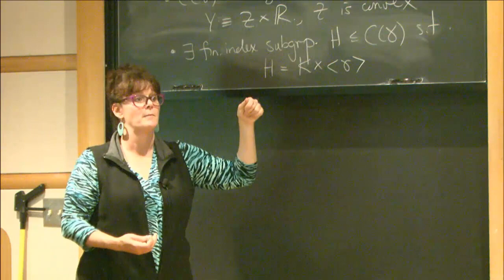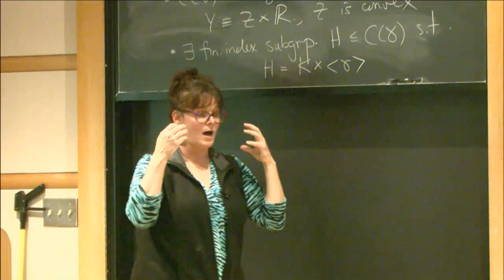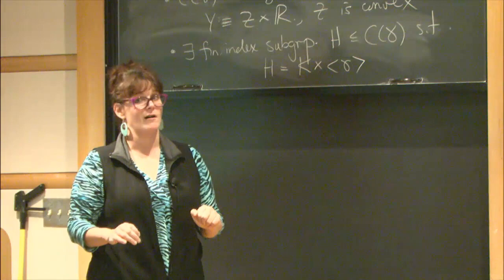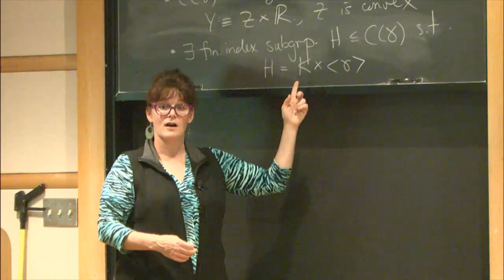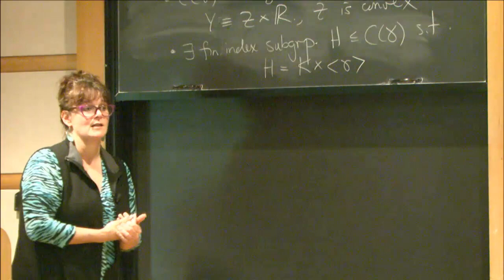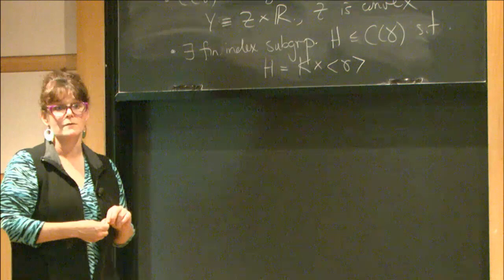Group-theoretically, the centralizer has to split off the element as a virtual direct factor. For the mapping class group, you can find a Dehn twist whose centralizer does not split this way — it looks like a central extension, but it doesn't split. That shows the mapping class group is not CAT(0). So those are two very powerful obstructions: the Flat Torus Theorem argument (for bad Z⊕Z subgroups) and the centralizer splitting theorem — both can rule out a group from being CAT(0).